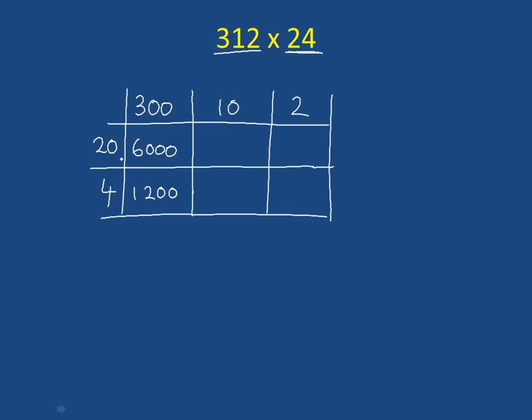Then we have 20 times 10, where we just do 2 times 1 is 2, and add on the two zeros in the question. Underneath, we're going to do 4 times 10. Well, we know 4 times 10 is 40. Then we'll do 20 times 2. Well, 2 times 2 is 4. Add a zero. And finally, the last one will be 4 times 2, which is just 8.